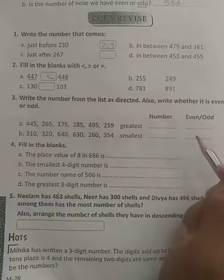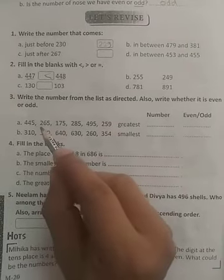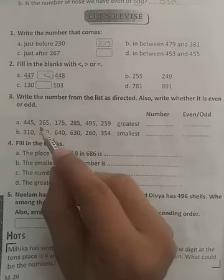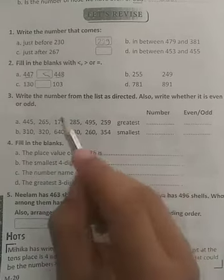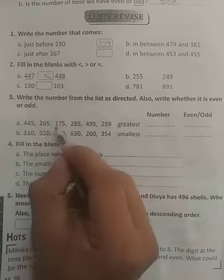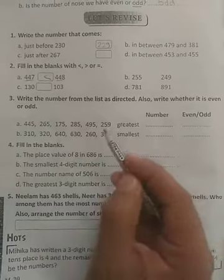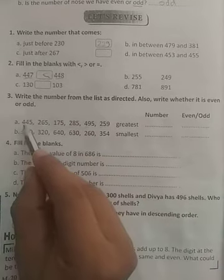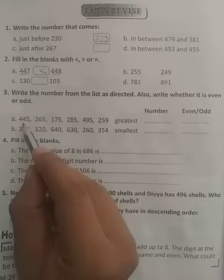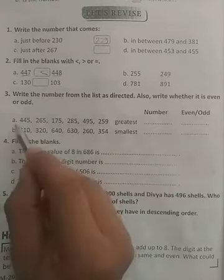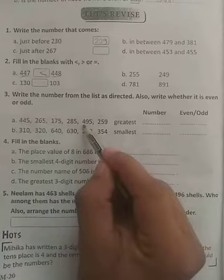Okay, greatest and smallest, and then we have to write whether it is even or odd. So in this, which one is greatest? Just see: 445, 265, 175, 285, 495, 259. Just take the first digit: 4, 2, 1, 2, 4, 2. In this, 4 is greater, but two numbers are starting from the 4, that is 445 and 495.